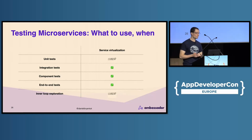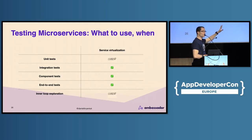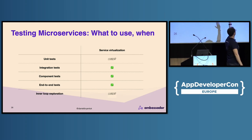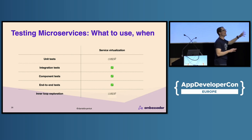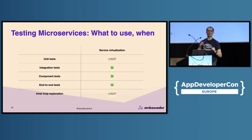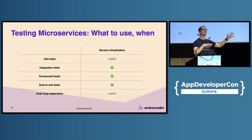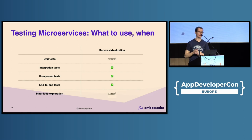What to use when with service virtualization: I don't really think it's for unit tests, because it tends to be a bit too slow. For integration, component, and end-to-end — if the PayPal sandbox is super flaky or slow, maybe I record it using Hoverfly or WireMock and put that in my end-to-end tests. For inner loop exploration, maybe — in that migration example we recorded requests and responses to understand more about the legacy service we were developing against.